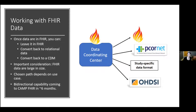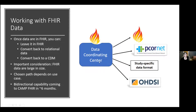One could also convert the data back to a common data model — sort of the holy grail, since it's so labor intensive to stand up one of these from scratch. If in the next couple of years we could actually produce a fully-fledged OMOP database from FHIR files, I can imagine how much more accessible that would make data models like OMOP and PCORnet to research centers that have smaller informatics teams and less informatics resources. The real takeaway is that the chosen path from FHIR really depends very much on your use case.